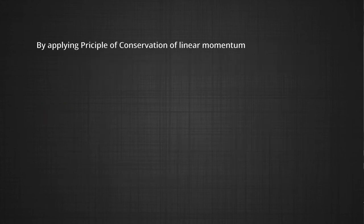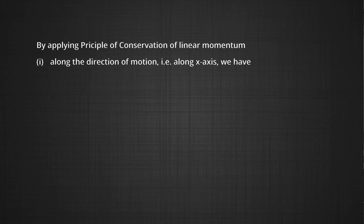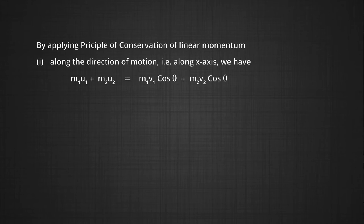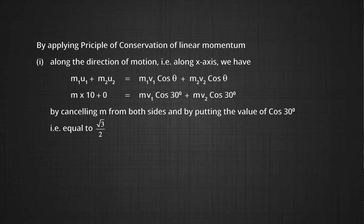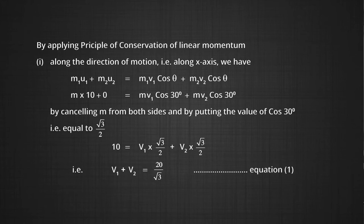Applying the principle of conservation of linear momentum along the x-axis: M1·U1 + M2·U2 = M1·V1·cos θ₁ + M2·V2·cos θ₂. Substituting the given values: M×10 + 0 = M·V1·cos 30° + M·V2·cos 30°. This gives 10 = V1·(√3/2) + V2·(√3/2), so V1 + V2 = 20/√3. Let this be Equation 1.